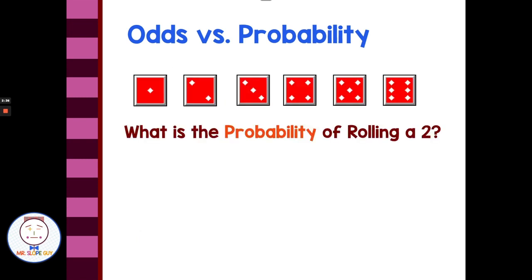Let's say we have a six-sided dice. What's the probability of rolling a 2? There's only one side that has a 2 on it, so that would be our success. A successful outcome would be if we rolled a 2, and there are six different ways a dice could land. So we have the probability of 1 out of 6 — one success out of six possibilities.